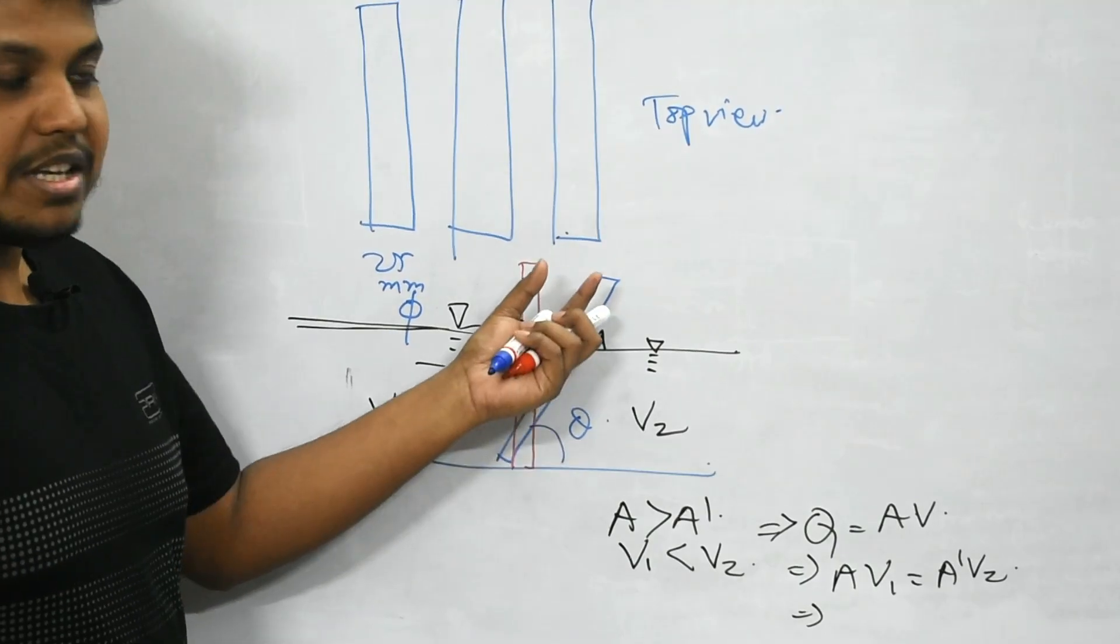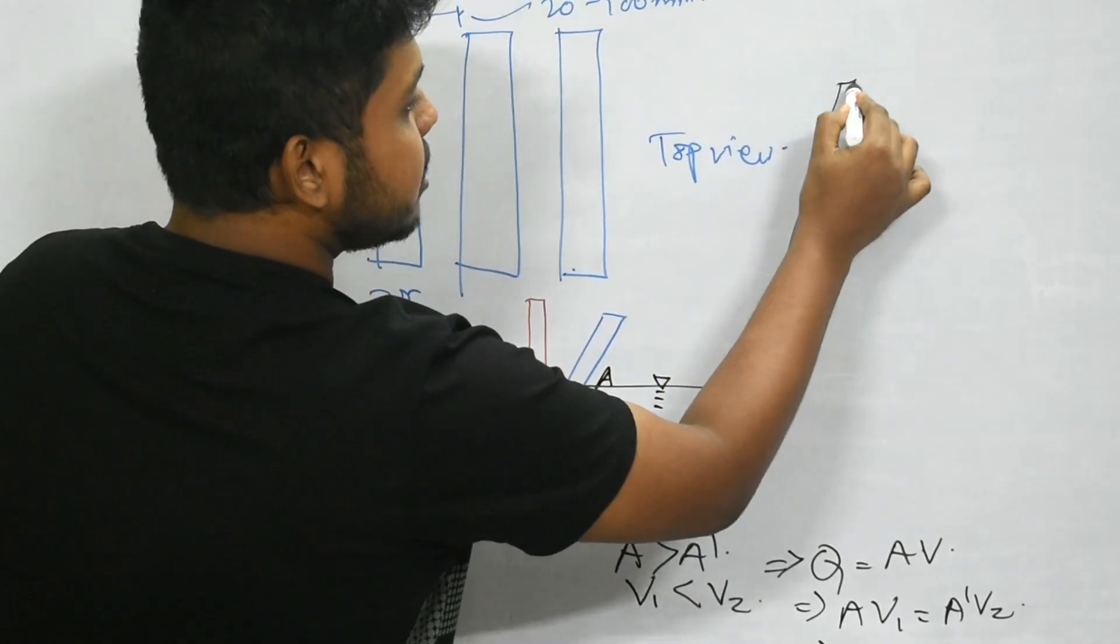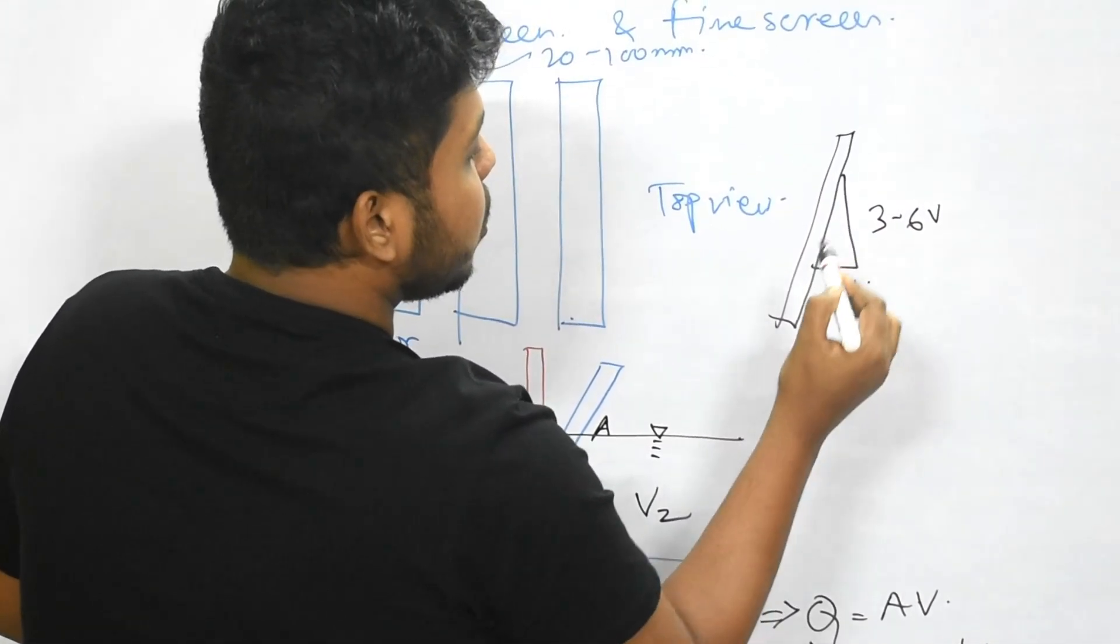That is why for better removal efficiency this is provided in some inclination. This inclination is of 3 to 6 vertical to 1 horizontal.